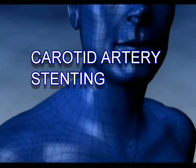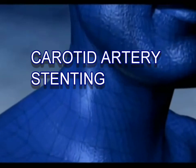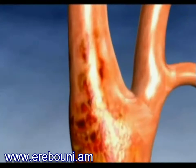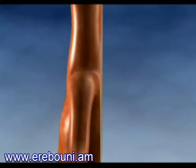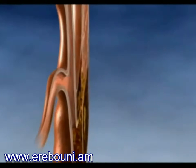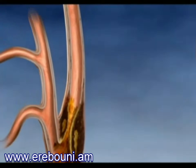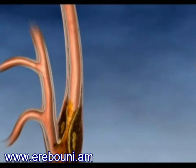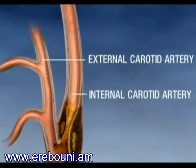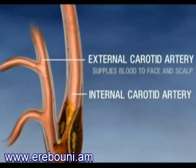Carotid arteries are located on each side of the neck and extend from the aorta to the base of the skull. These arteries supply blood to the brain. There is one main carotid artery on each side of the neck, and each of these divides into two major branches: the external and the internal carotid arteries. The external carotid supplies blood to your face and scalp, while your internal carotid supplies blood to the brain.